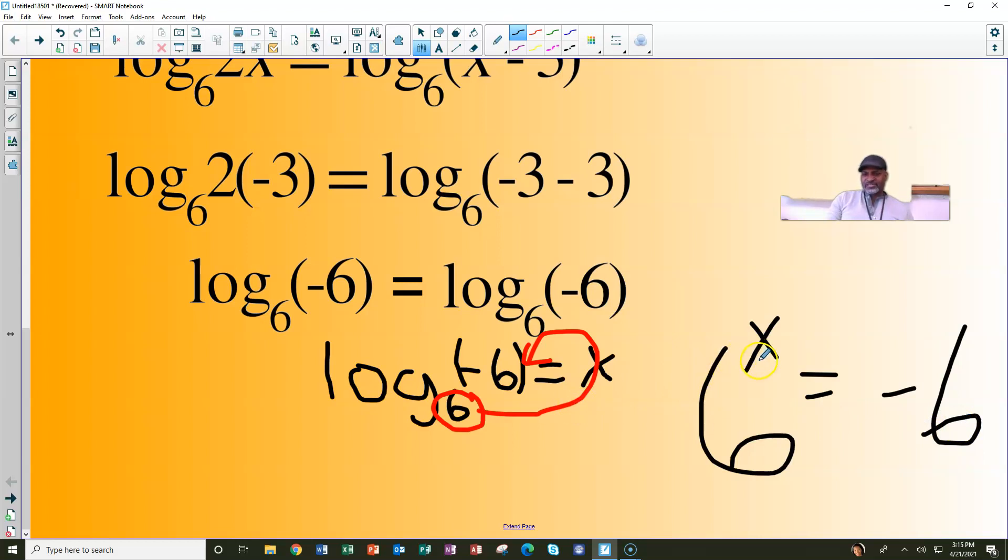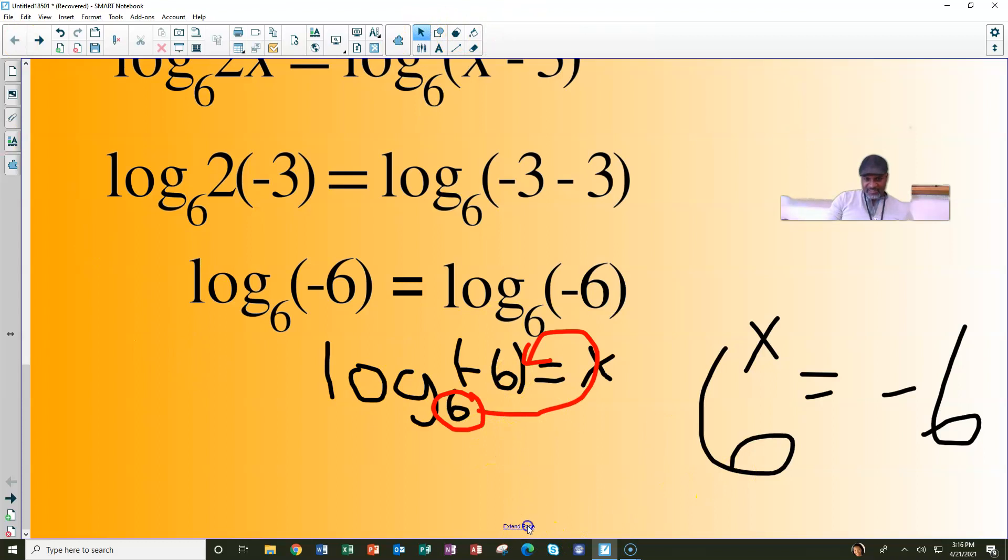Your first thought might be, let's raise it to the negative 1 power. Well, let's see what happens if we do that. If we take 6 and we raise it to the negative 1 power, that's equal to 1 over 6. Although it's a fraction, it's not negative. It's a small positive number, but it's not negative. We need it to be a negative number.